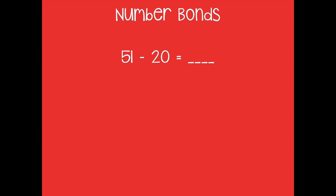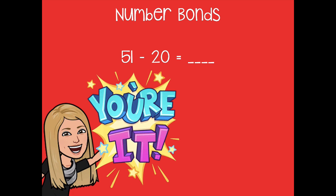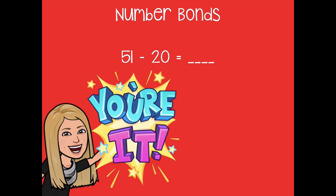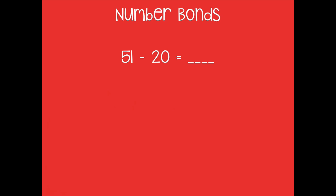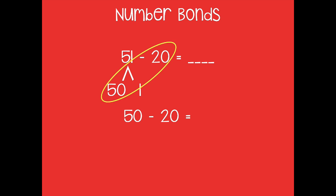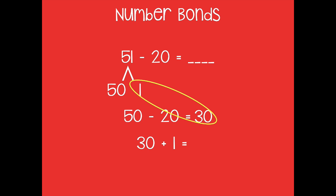Let's try this same problem with the number bond. Pause the video, solve it, and then click play when ready. I'm going to break apart 51 into 50 and 1 — like using expanded form. Now I subtract my tens: 50 minus 20 equals 30. Then I combine that back with my 1: 30 plus 1 equals 31. We got the same answer using the arrow way and the number bond — good practice for both, but you can choose which one works best for you. So 51 minus 20 equals 31.